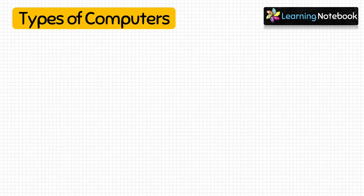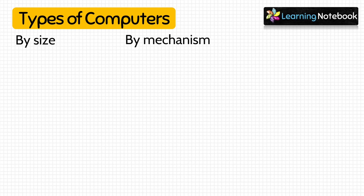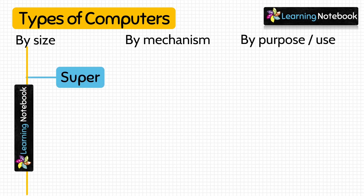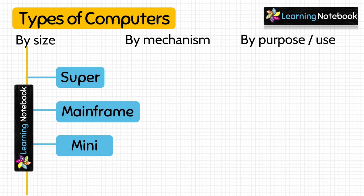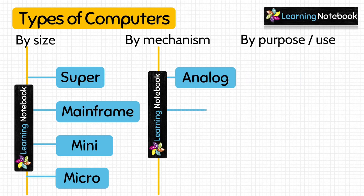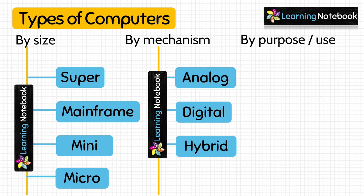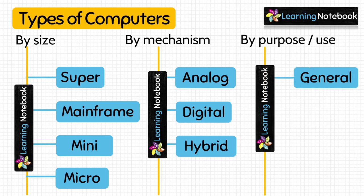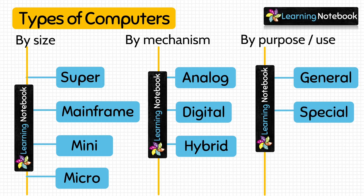We can classify computers in three different types: first is by size, second by mechanism, and third by purpose or by use. On the basis of size, types of computers are supercomputer, mainframe computer, mini computer, and microcomputer. On the basis of mechanism, types are analog computers, digital computers, and hybrid computers. And on the basis of purpose, types are general purpose computers and special purpose computers.